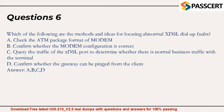Question 6. Which of the following are the methods and ideas for locating abnormal XDSL dial-up faults? A. Check the ATM package format of modem. B. Confirm whether the modem configuration is correct. C. Query the traffic of the XDSL port to determine whether there is normal business traffic with the terminal. D. Confirm whether the gateway can be pinged from the client. Answer: A, B, C, D.